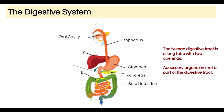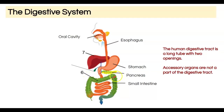Food moves all throughout the small intestine — we've made it much shorter in this diagram than it actually is. From there it moves into this green structure called the large intestine: the ascending colon moving upward, the transverse colon across, and the descending colon.